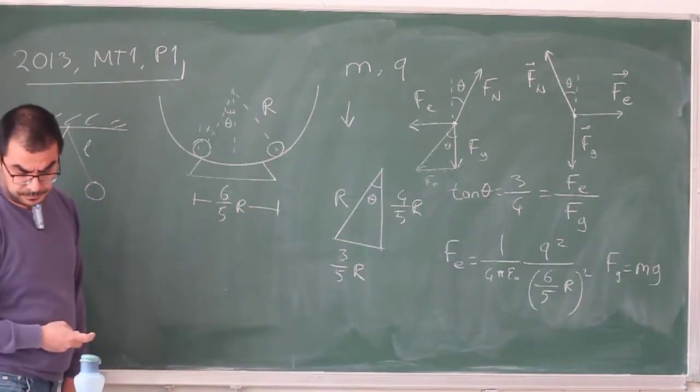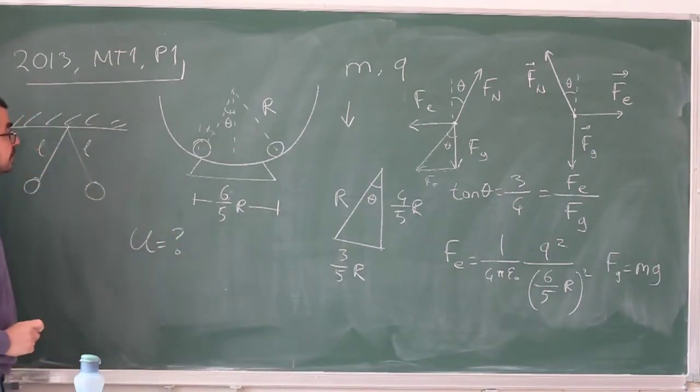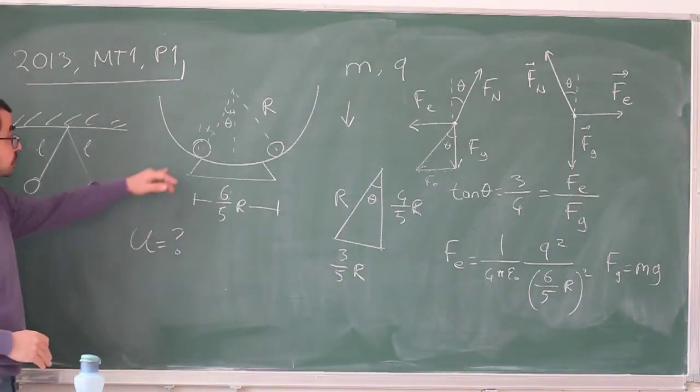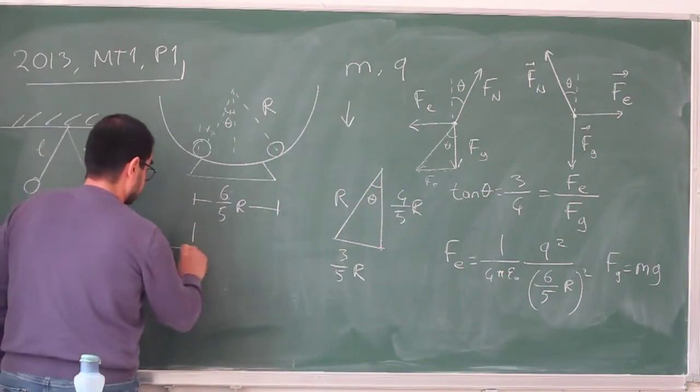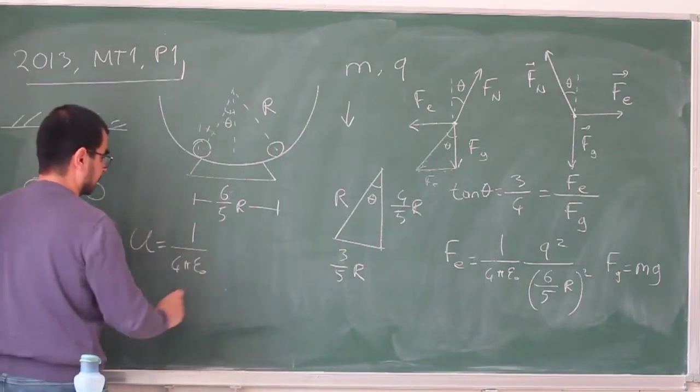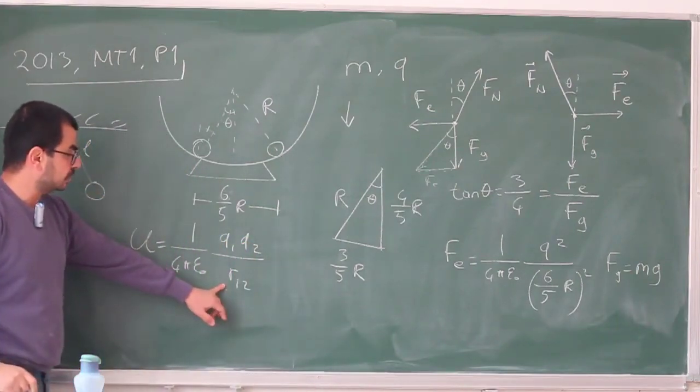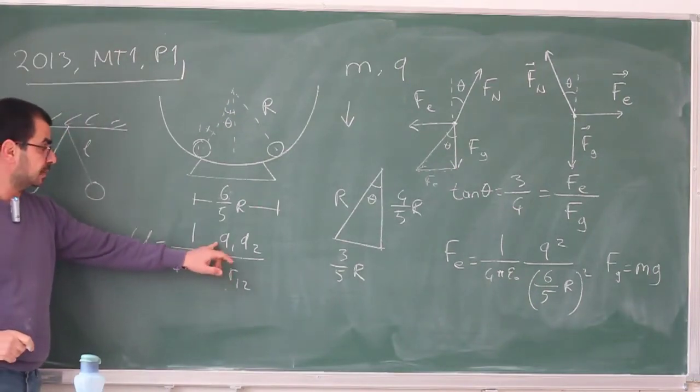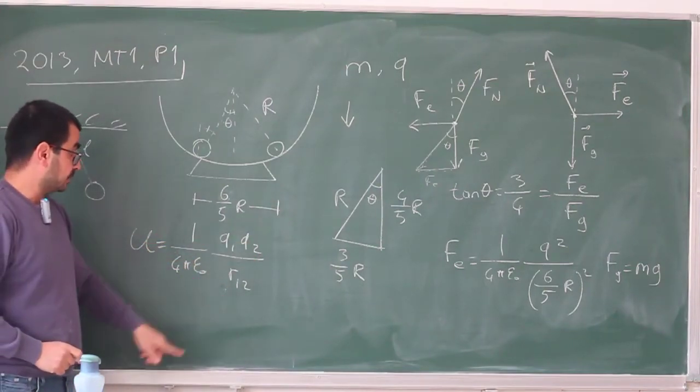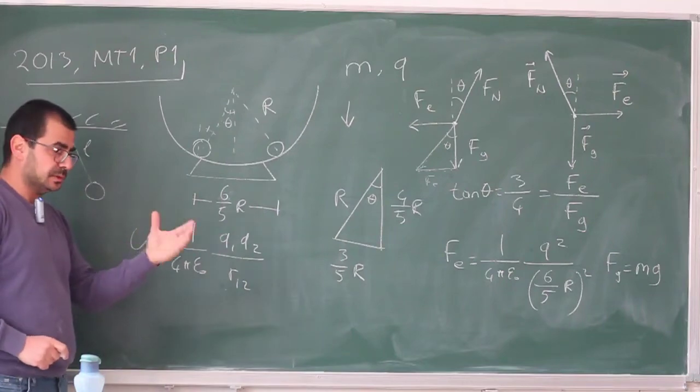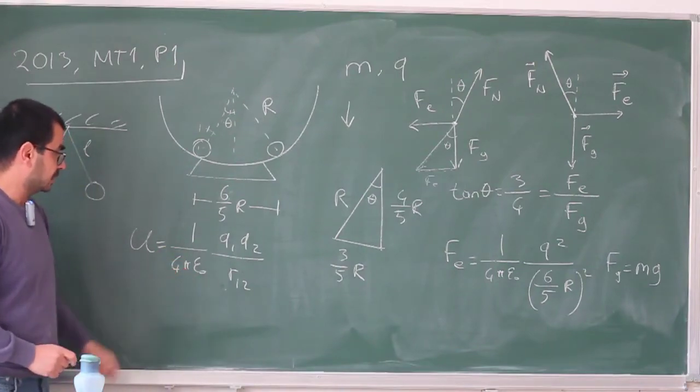And finally, they are asking for the electrostatic potential energy of these two charges. This is not something we have seen yet, but we might as well state this. So for two charges, the electrostatic potential energy is given by a simple formula. It's 1 over 4 pi epsilon 0, q1, q2 divided by r12, where this r12 is the distance between the point charges, and these are the values of the charges. In this case, they are equal, and this is something we know. So the one thing to notice here is that there is no square here. The potential energy goes as 1 over r, not 1 over r squared.